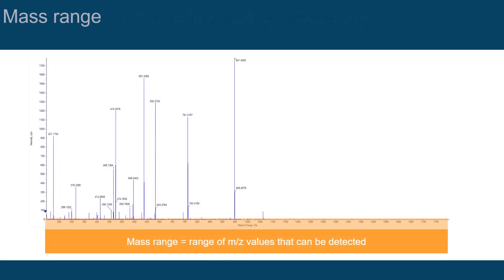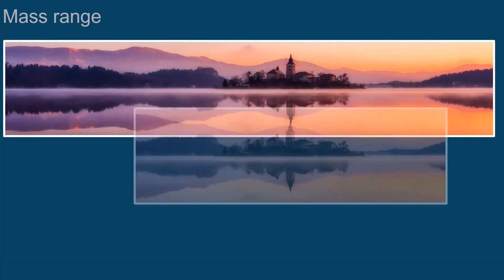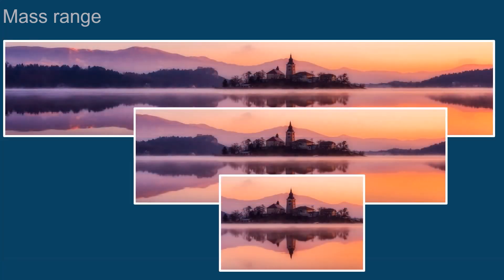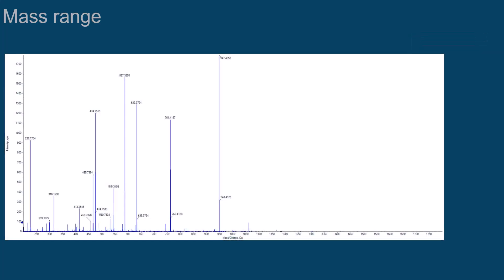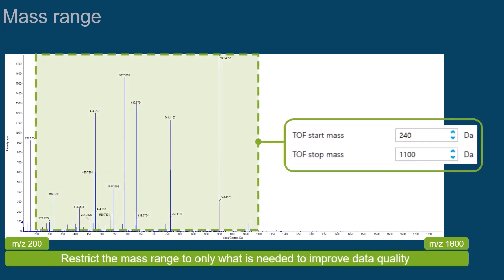Each type of mass spectrometer has a characteristic range of M over Z values that can be detected. You can compare this to the area that can be captured with wide-angle or zoom lenses. In practice, you can actively determine in which part of it ions are actually allowed to enter the mass spectrometer and thus being recorded. In this example, the mass range was recorded between M over Z 200 and M over Z 1800. Restricting the mass range only to what is needed for analysis can improve data quality.